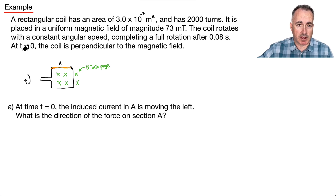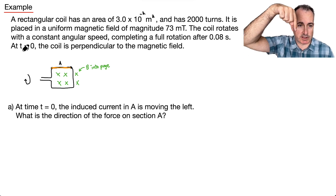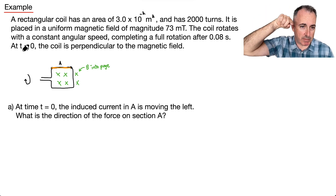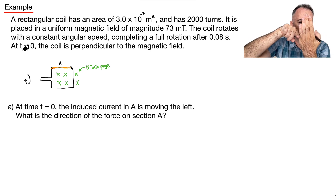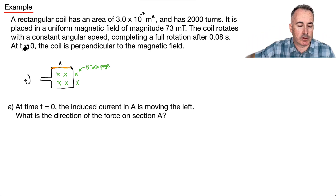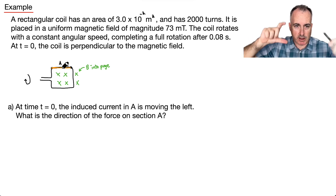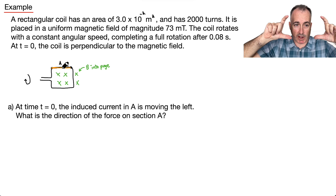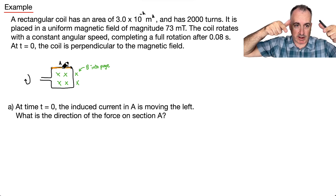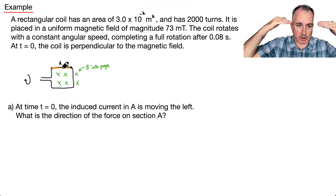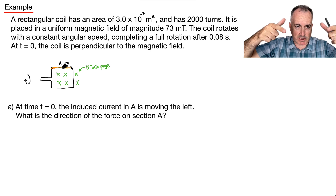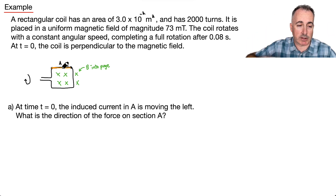In other words, the magnetic field is into the page, for example, and the coil is completely flat — just the way I've drawn it. Because you have to imagine at some point the coil is straight up and down, lined up with the magnetic field. In this case at t equals 0, it's exactly 90 degrees to it.